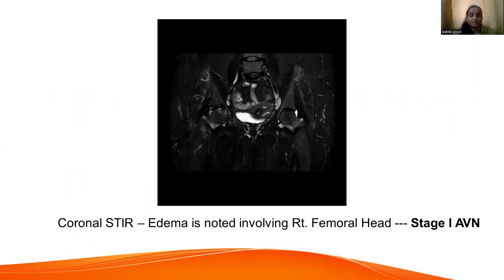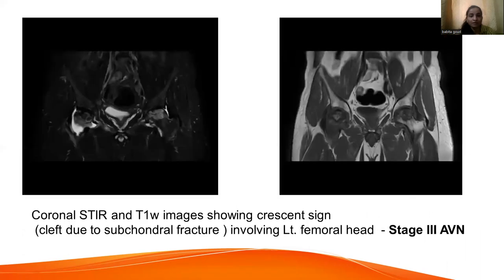This is a coronal STIR image showing edema involving the right femoral head, which can be seen in stage one AVN. This is a coronal STIR and T1 weighted image showing the crescent sign. There is a cleft due to subchondral fracture involving the left femoral head, which is seen in stage three AVN.